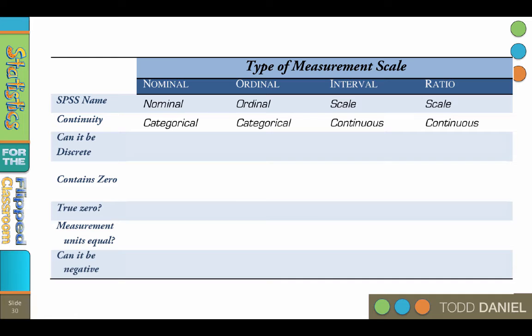Both nominal and ordinal scales are categorical data. Interval and ratio data are continuous. Nominal and ordinal data are always discrete data. That means that you can only have whole numbers. Interval and ratio data are typically continuous data and allowed to have decimals or fractions, although they could, in some rare circumstances, be discrete.